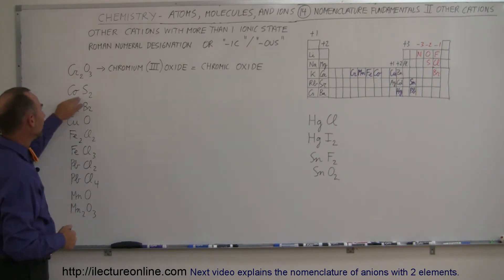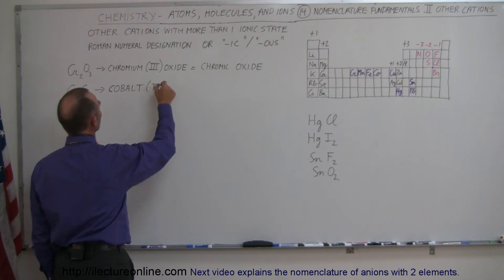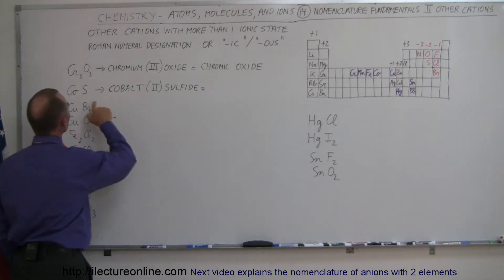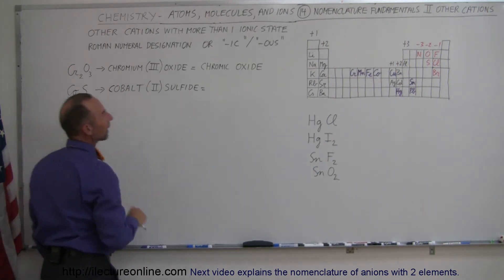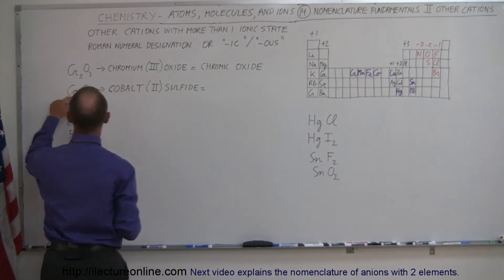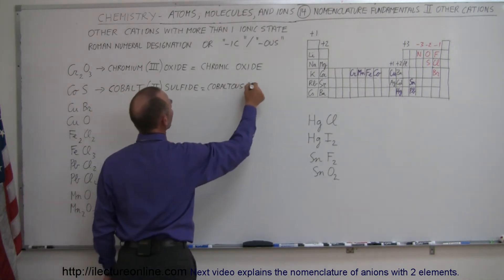Here we have cobalt and sulfur. This would be cobalt two sulfide because sulfur is at a negative two state, so cobalt has to be plus two, and we call that cobaltous sulfide.